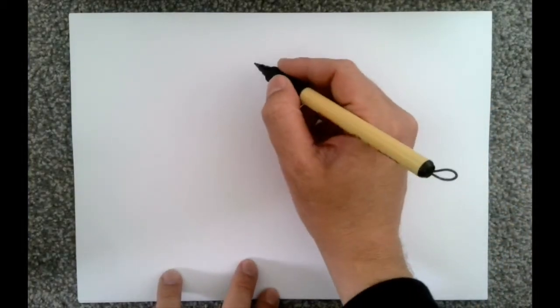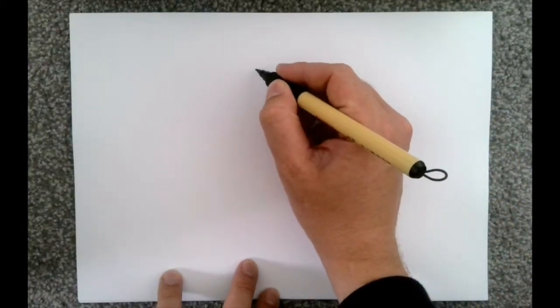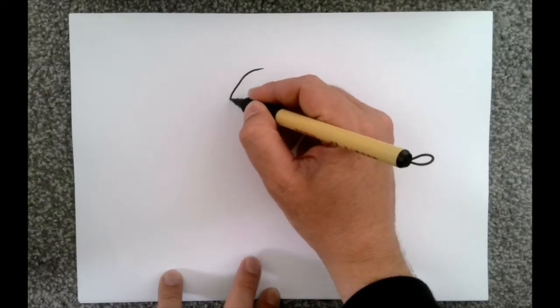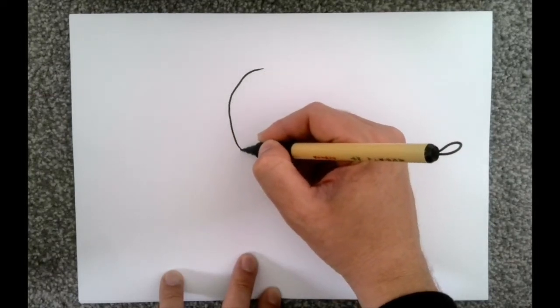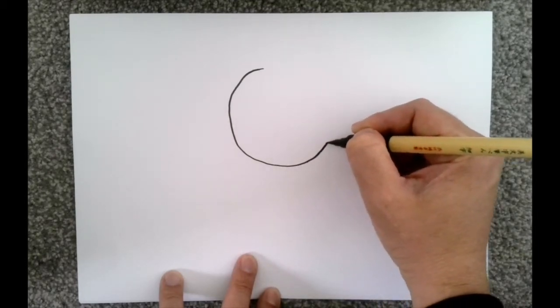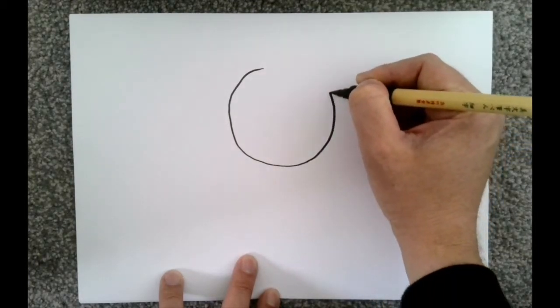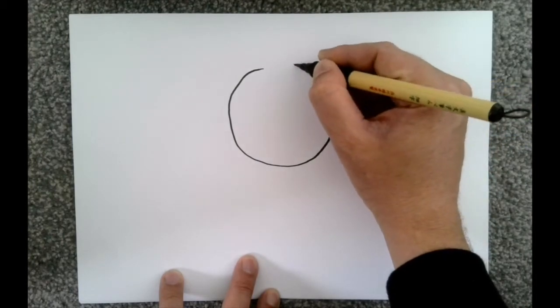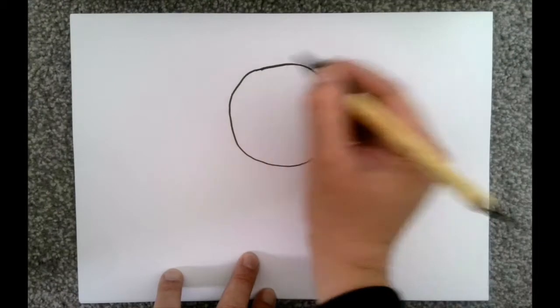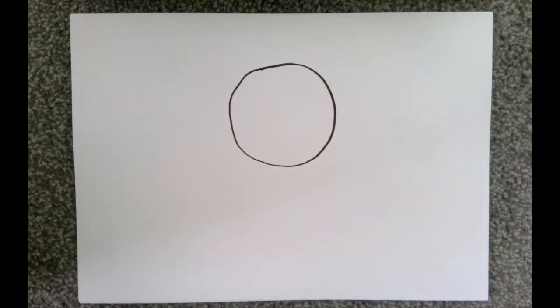As with all of our people that we've drawn so far, we're going to start with the head. So it's a circle. And it doesn't matter if it's not perfect. Circles can be pretty hard to do. Something like that. There we go. So that's our starting point.